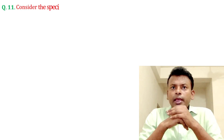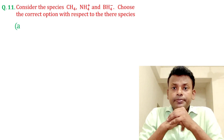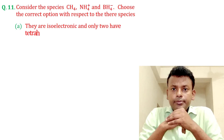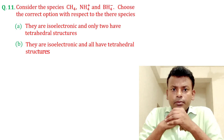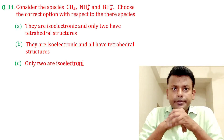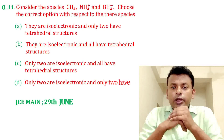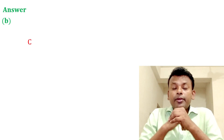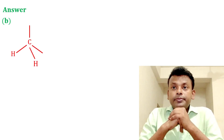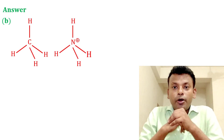Question 11: Consider the species CH₄, NH₄⁺, and BH₄⁻ — choose the correct option with respect to these species. This question was set in JEE Main 29th June 2022 evening shift. Answer: Option B is correct. All structures are drawn here — all are tetrahedral and each has 10 electrons. So Option B is the correct answer.